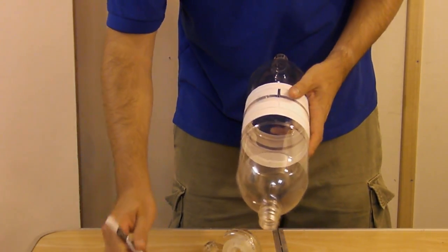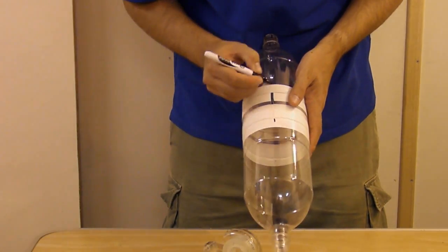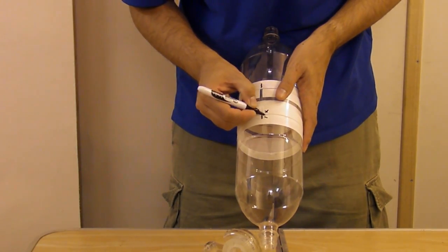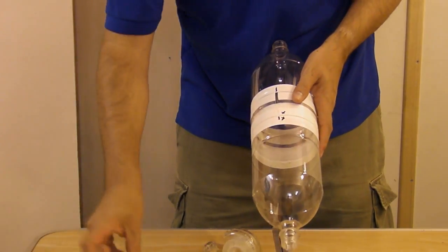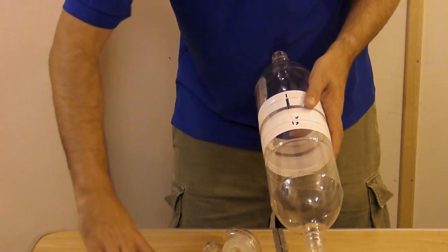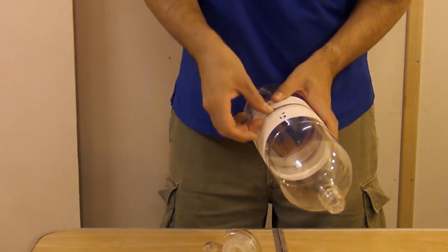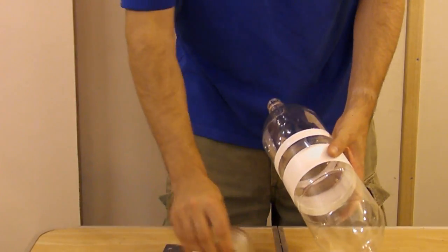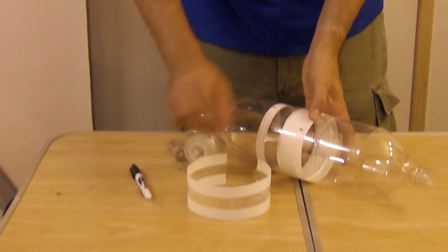Grab your marker again and just mark where the center of the sleeve is. And also mark the sleeve, just to make sure you get it around the right way. Then remove the sleeve and sand the center section of the bottle. And now the sleeve is ready for gluing.